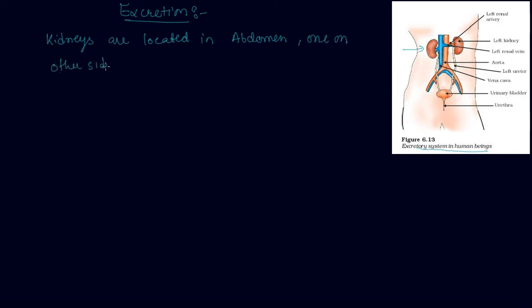Our excretory system also includes a pair of ureters, urethra, and a urinary bladder.